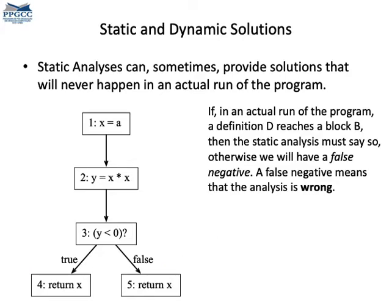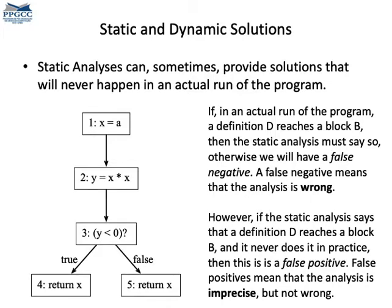Nevertheless, if some definition may reach any program point, then the analysis must say it. Otherwise, we will have a false negative. False negatives are wrong. However, if the static analysis says that a definition reaches a program point, but it never does, then the analysis is just imprecise. This is a false positive. False positives, in the context of a may analysis, are acceptable. We are failing to find precise information, but we are not saying anything that's false.